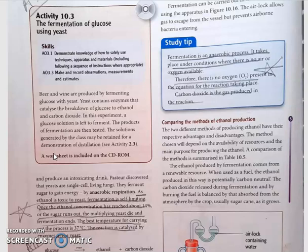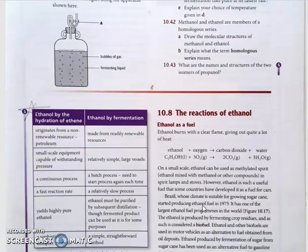Comparing the methods of ethanol production: both ways have their own advantages and disadvantages. The method chosen depends on the availability of resources and the main purpose of producing ethanol. Ethanol produced by fermentation comes from a renewable resource, like sugar, whereas the hydration process uses a petroleum product. When used as fuel, ethanol produced this way is potentially carbon neutral. The carbon dioxide released during fermentation and burning is balanced by that absorbed from the atmosphere by the crop.